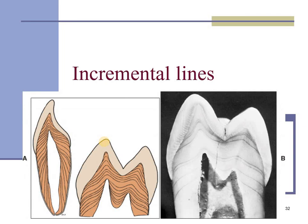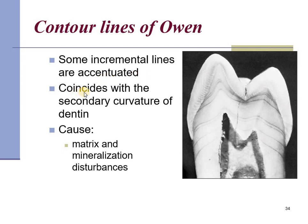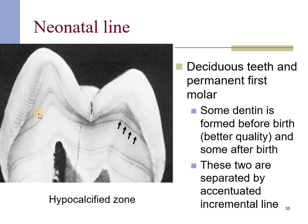Like in enamel, dentine also has incremental lines — a prominent incremental line usually follows the contour of the pulp chamber. Daily incremental lines of 4 to 8 microns width, perpendicular to the dentinal tubules, are called von Ebner's lines. Some incremental lines are accentuated because of the coincidence of the secondary curvature of the dentine; these are called contour lines of Owen. An accentuated contour line is visualized as a hypocalcified zone called the neonatal line, which separates dentine formed before birth from that formed after.